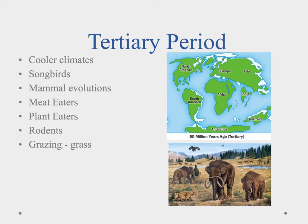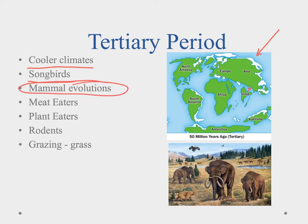Let's take a look at the tertiary period. Notice that Pangaea was continuing to split. Fifty million years ago, you could look at the map and it kind of looks like it does today, though India is going to collide with Asia and there's still some movement. We had cooler climates, we saw the evolution of songbirds, and we had these mammal evolutions tied to how they ate.